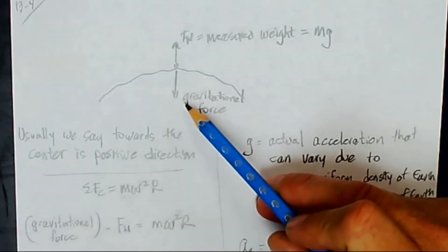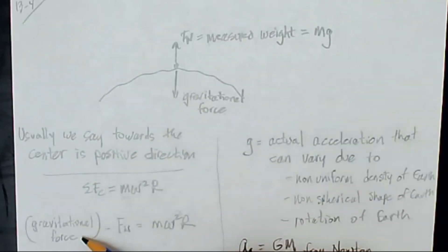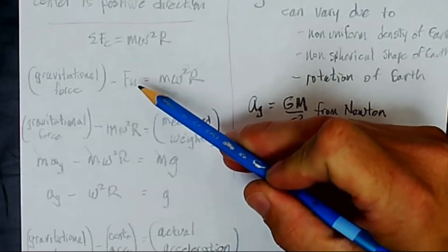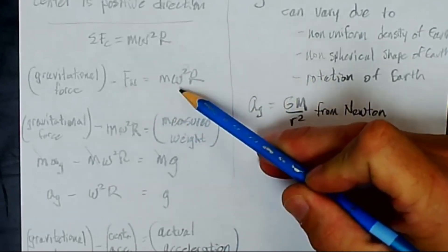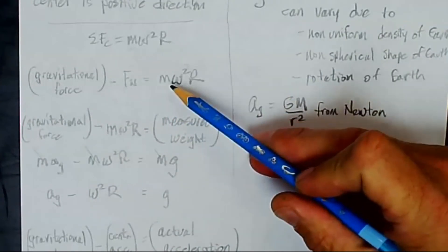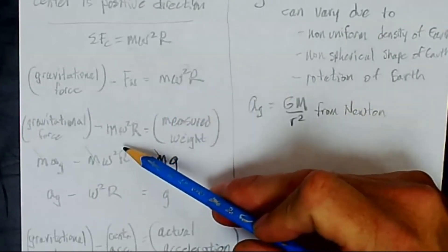Okay, so towards the center of the circle will be the positive direction, so gravitational force is positive, away from the center is negative, the normal force, there's my sum of forces. What is the normal force? Well, when you stand on a scale and read your weight, that's what you're measuring, the normal force. So I'm going to move this to the other side and call it my measured weight, and then I'll move this m omega squared r to the left side of the equation.